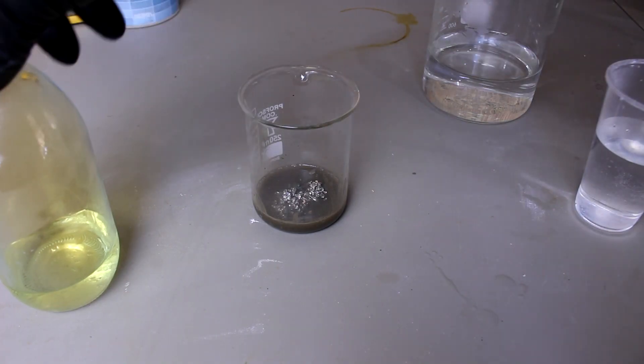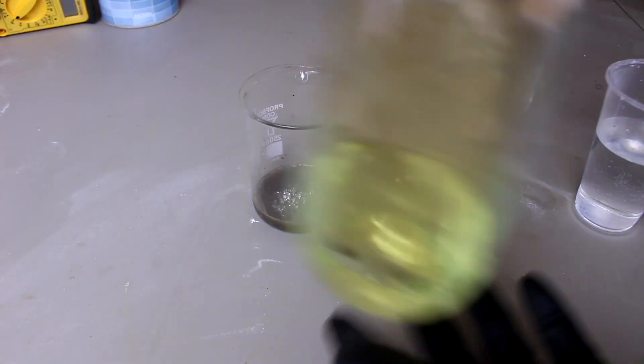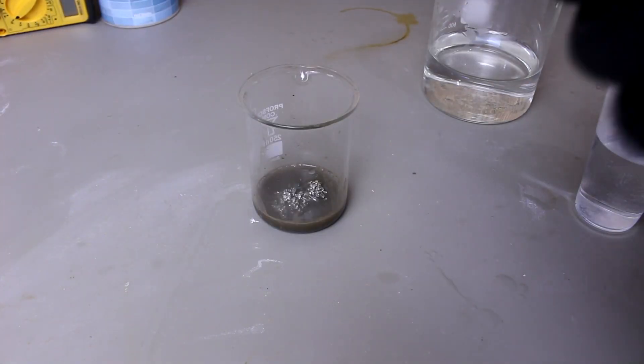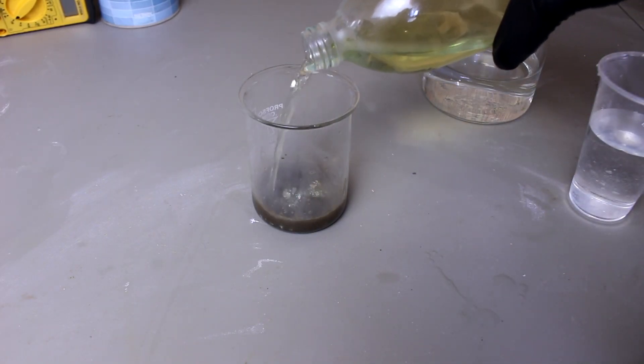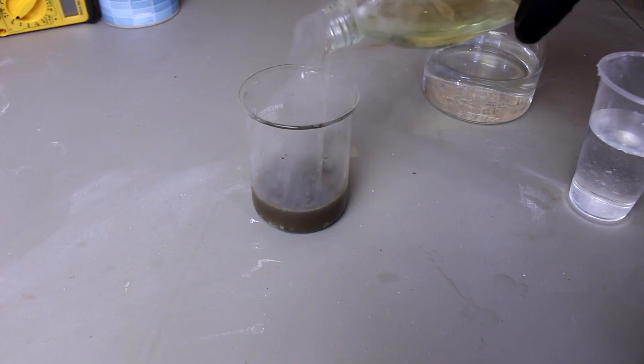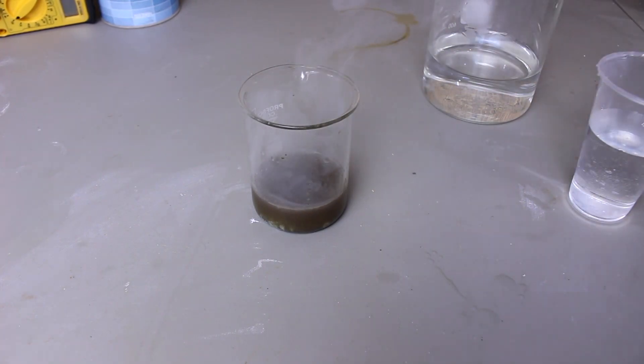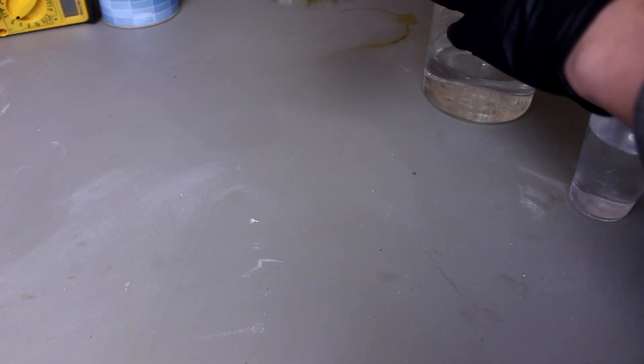So I've got some nitric acid here. Let's add this to it and dissolve everything. Well, except the gold of course. This will dissolve the silver, copper, lead, and the mercury.